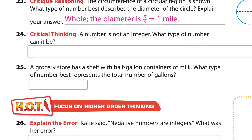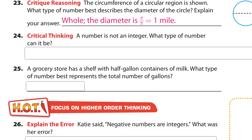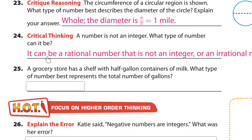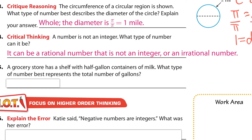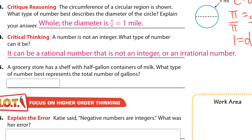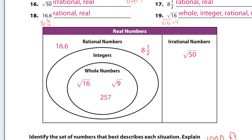A number is not an integer — what can it be? If it's not an integer, it can be a rational number that's not an integer, or an irrational number. Looking at our chart, if it's not an integer, it could be in the rational numbers out here, or it could be the irrational numbers. But it can't be a whole number.